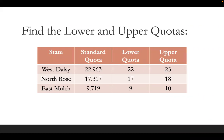You'll notice when I have my standard quota, each one of them is a decimal. If we just erase the decimal numbers, there are our lower quotas. For the upper quotas, we're just rounding each number up, which is one more than the lower quota. And that is how you find the lower and upper quotas for a particular state or region. Remember, it always starts with the standard quota, and then we round from there.